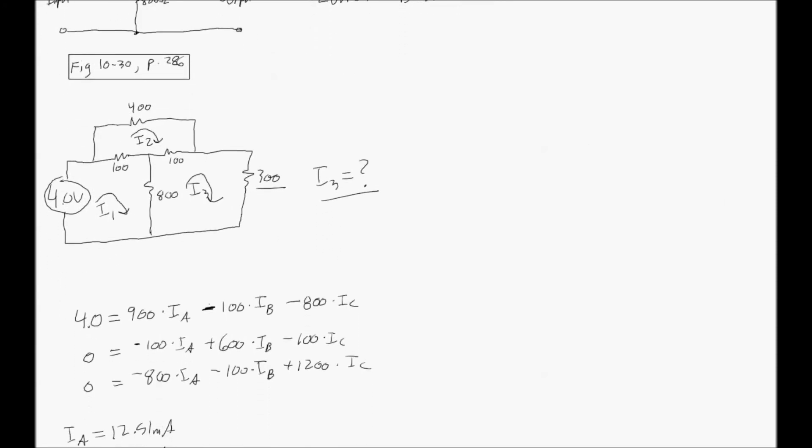Developing our equations, that goes back to ESET 120 using mesh analysis. The 900 ohm resistor comes from all the resistors in the I1 loop, 100 and 800. 4 comes from 4 volts.